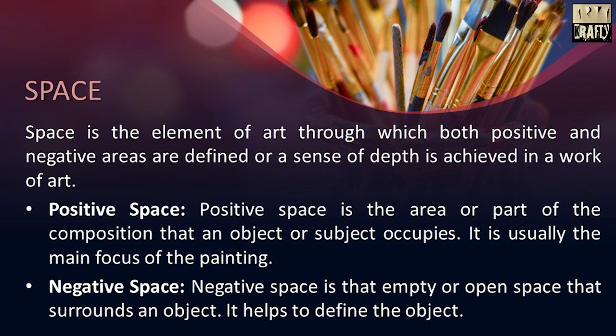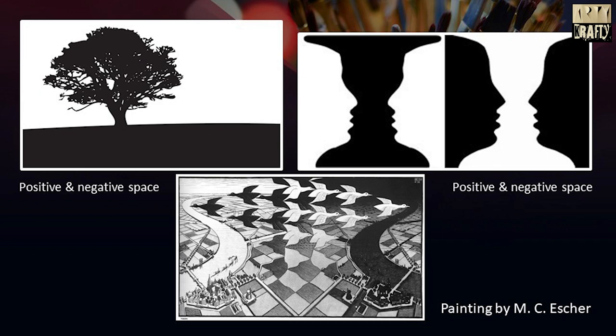Then, space. Space is the element of art through which both positive and negative areas are defined, or a sense of depth is achieved in a work of art. Positive space is the area or part of the composition that an object or subject occupies — it is usually the main focus of the painting. Negative space is that empty or open space that surrounds an object; it helps to define the object. Here are the examples of some positive and negative space. This is the painting done by M.C. Escher.